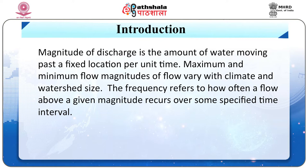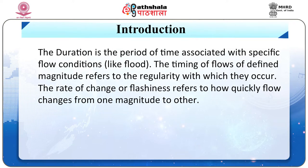Magnitude of discharge is the amount of water moving past a fixed location per unit time. Magnitude can be referred to as either absolute or relative. Maximum and minimum flow magnitudes vary with climate and watershed size. Frequency refers to how often a flow above a given magnitude occurs over some specified time interval. Duration is the period of time associated with specific flow conditions, like floods.